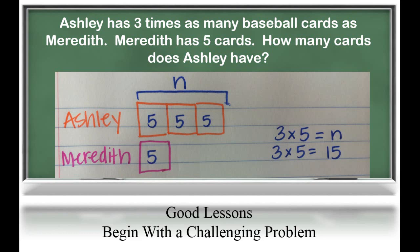You can see that drawn in the model. We know that Meredith has five, so if Meredith has five, Ashley has three groups of five. What we don't know is how many cards Ashley has — that's what our variable will be. Students will be required to write an equation that matches this model: three times five equals N. Students will use their knowledge of basic facts to know that three times five equals 15, so N equals 15.